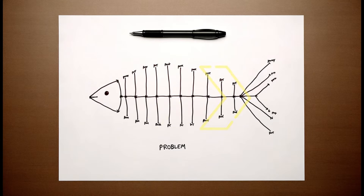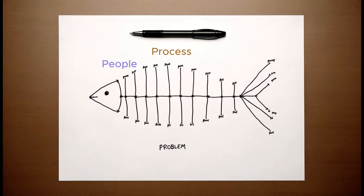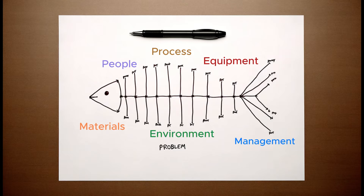In the realm of business, common categories might encompass people, process, equipment, materials, environment, and management. Extend lines from the spine for each of these categories.